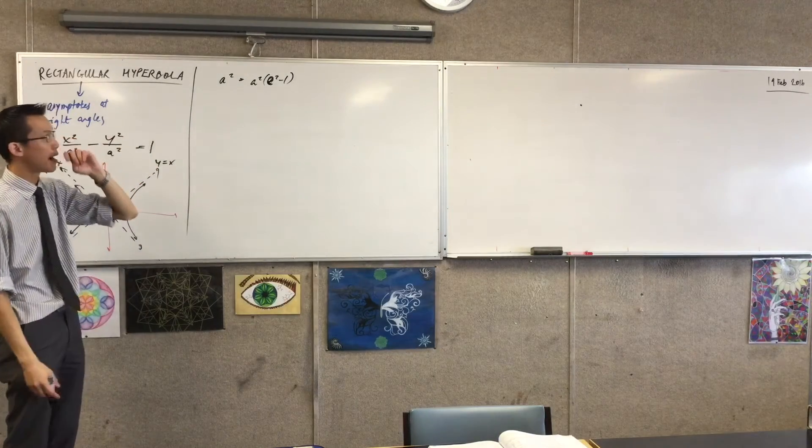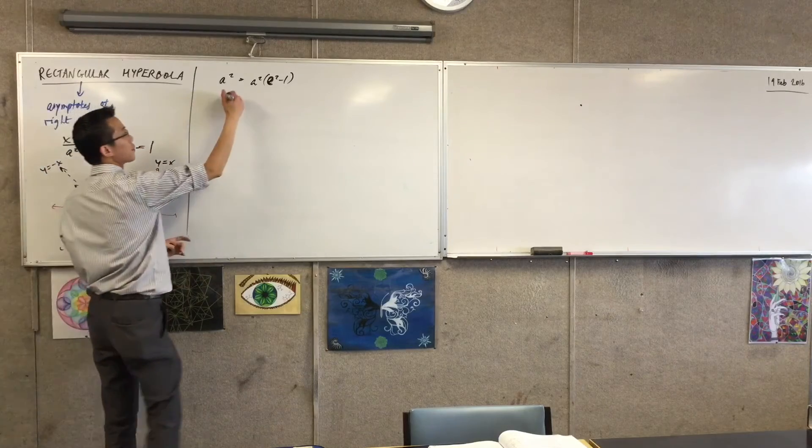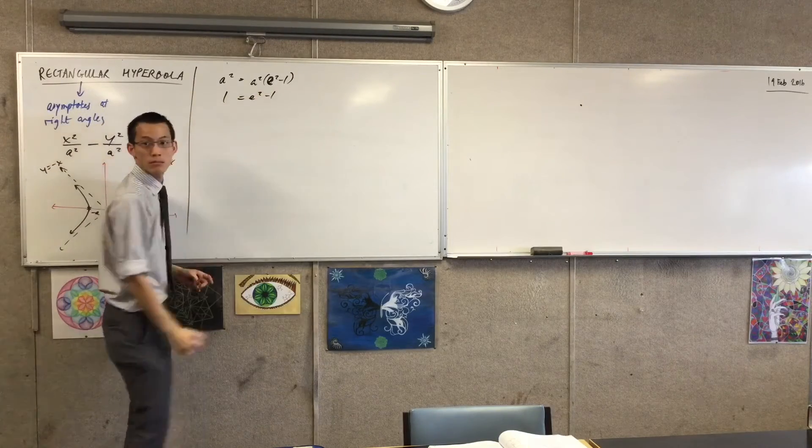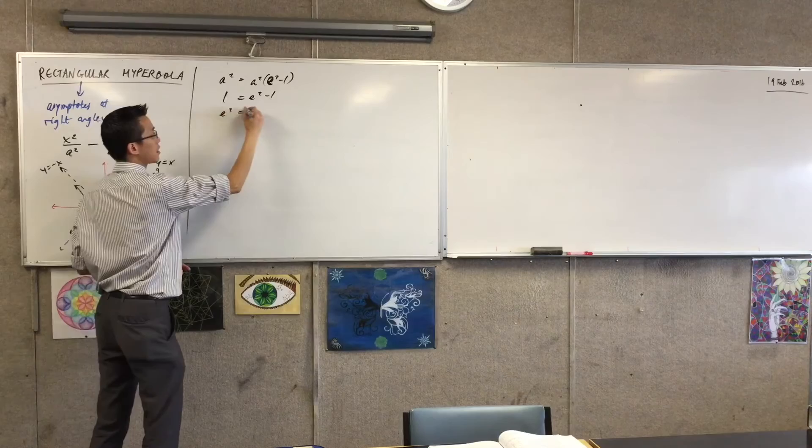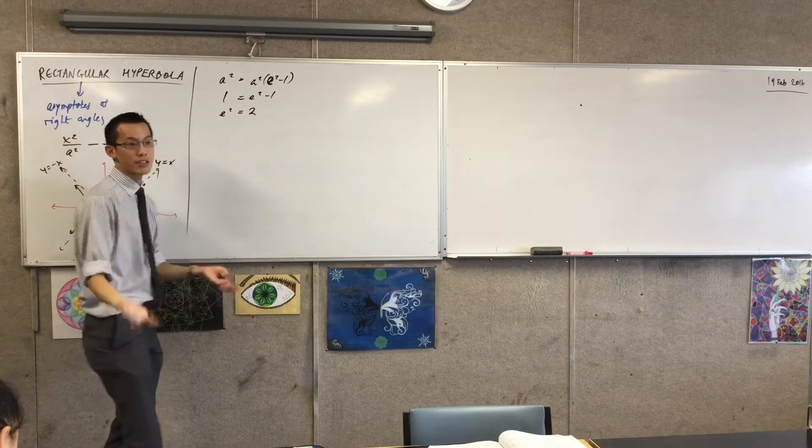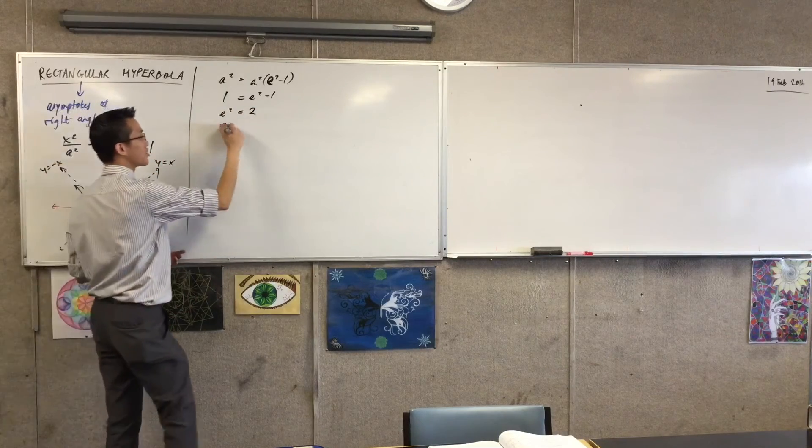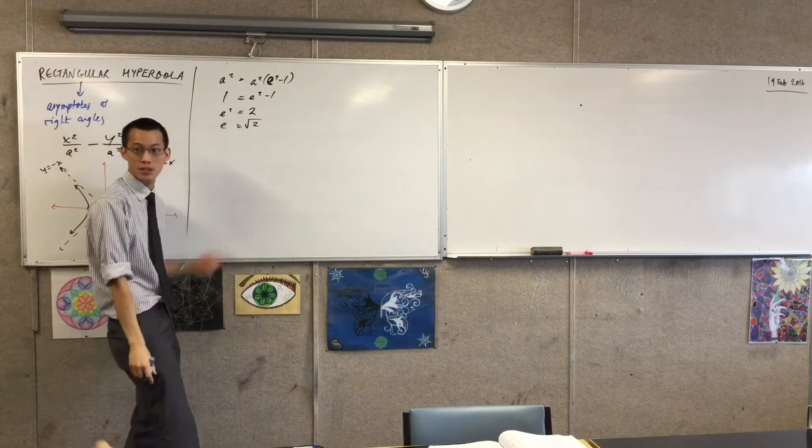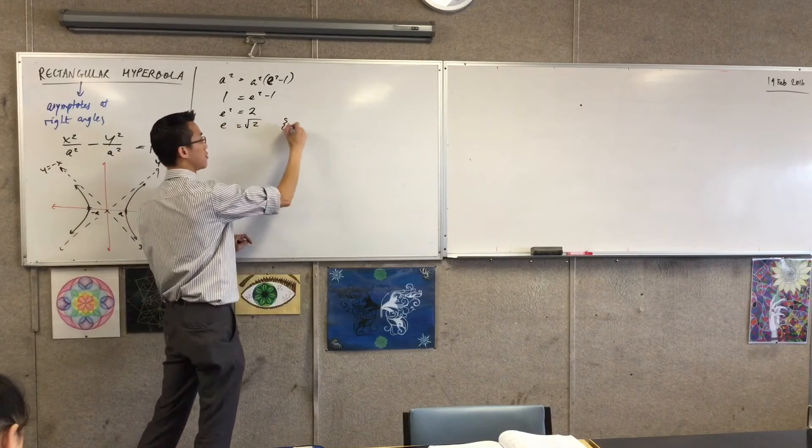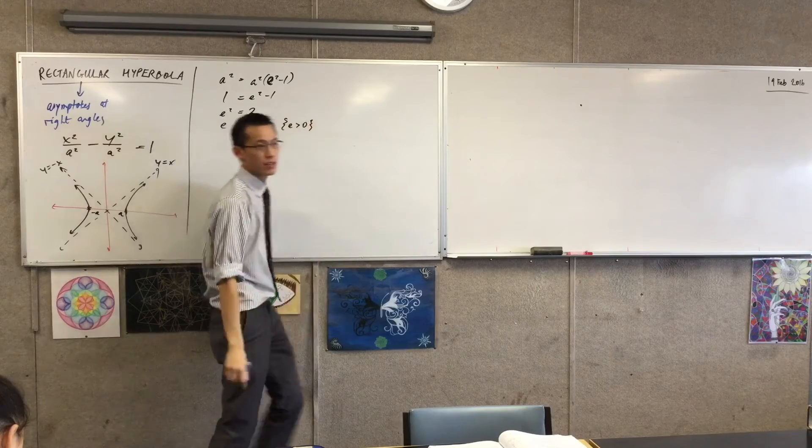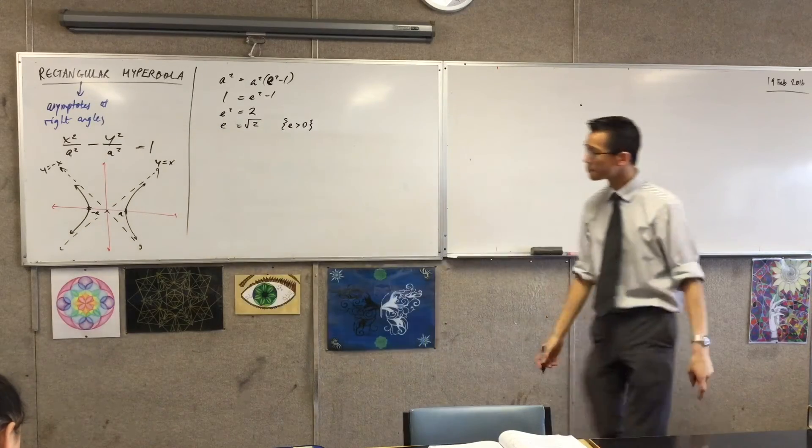So I'm going to get one equals e squared minus one. So then making e squared the subject, I get this. And because the eccentricity is a ratio between two positive things, I can just say, well, there's one value for this eccentricity, root two. Because eccentricity is positive.